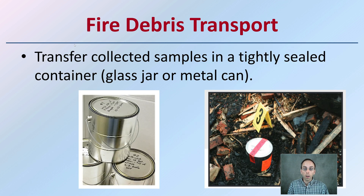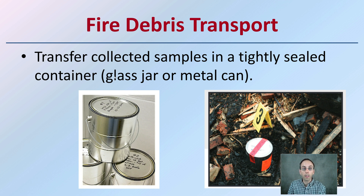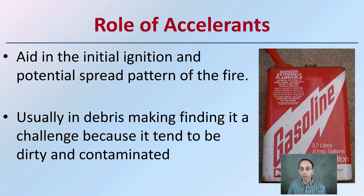When transporting fire debris, we want to transfer the collected samples into a tightly sealed container — typically a glass jar or a metal can. We want to make sure we're labeling it and putting evidence tape over it so no one can tamper with it. We should also indicate with an image and a number where we collected that sample from, because it could be very important later in the investigation process.